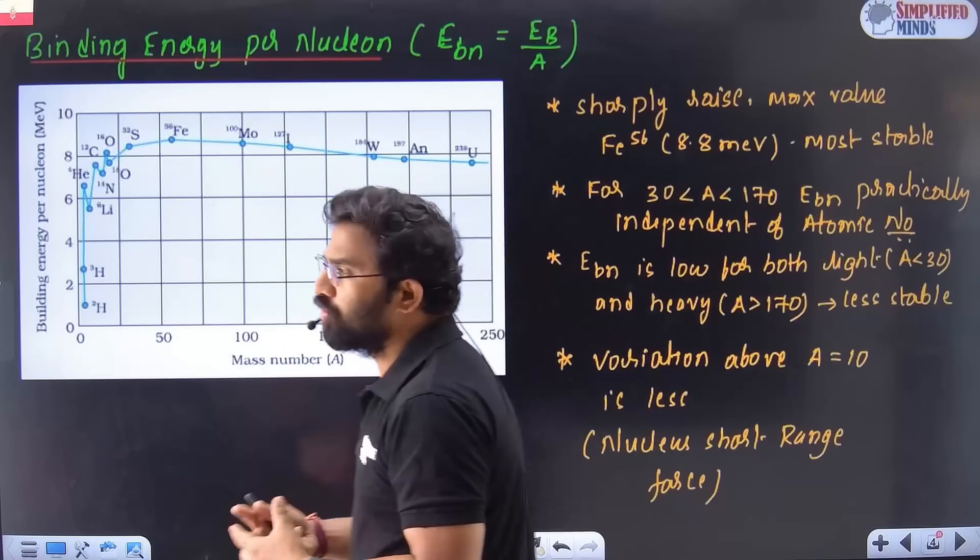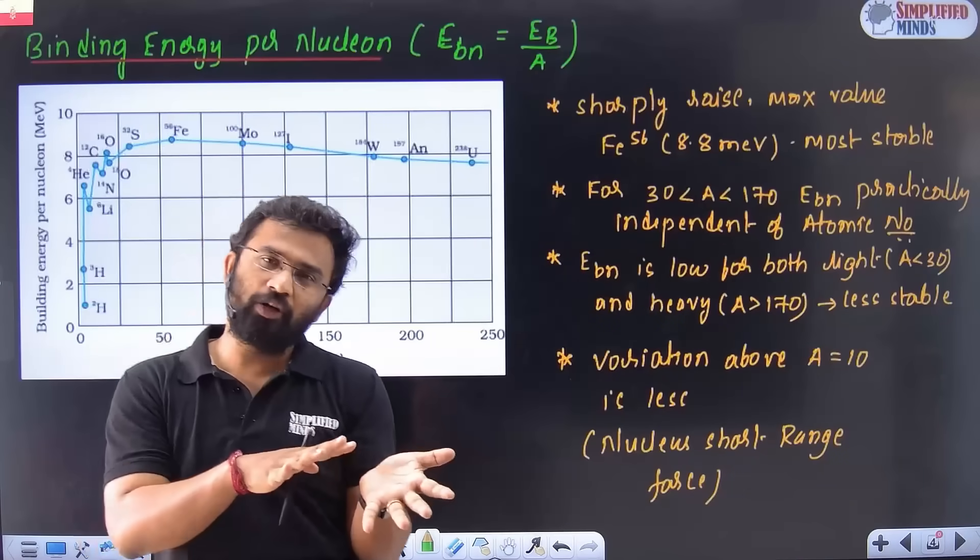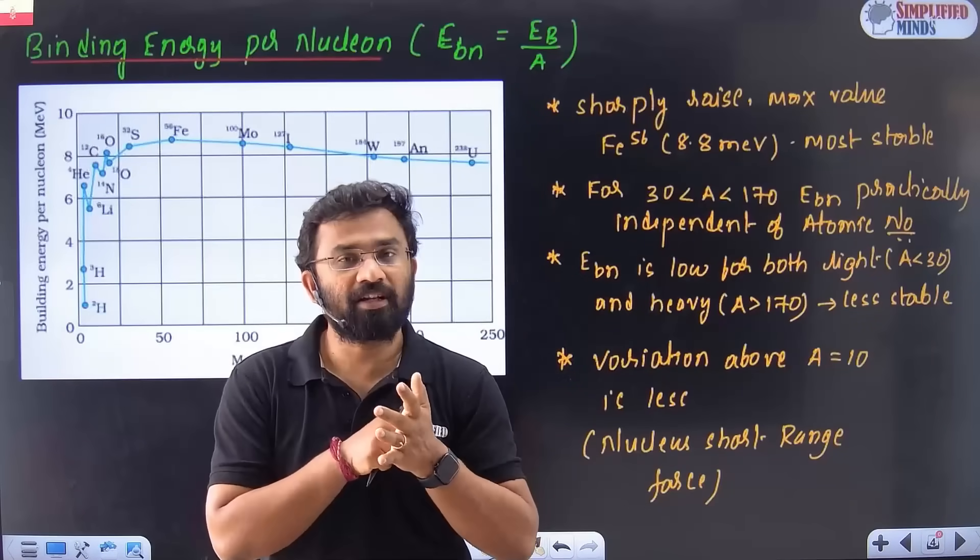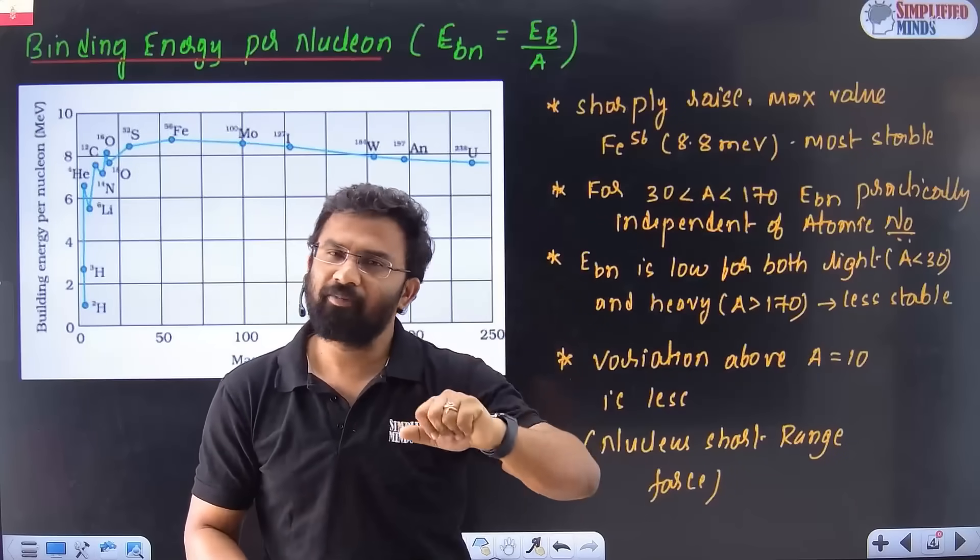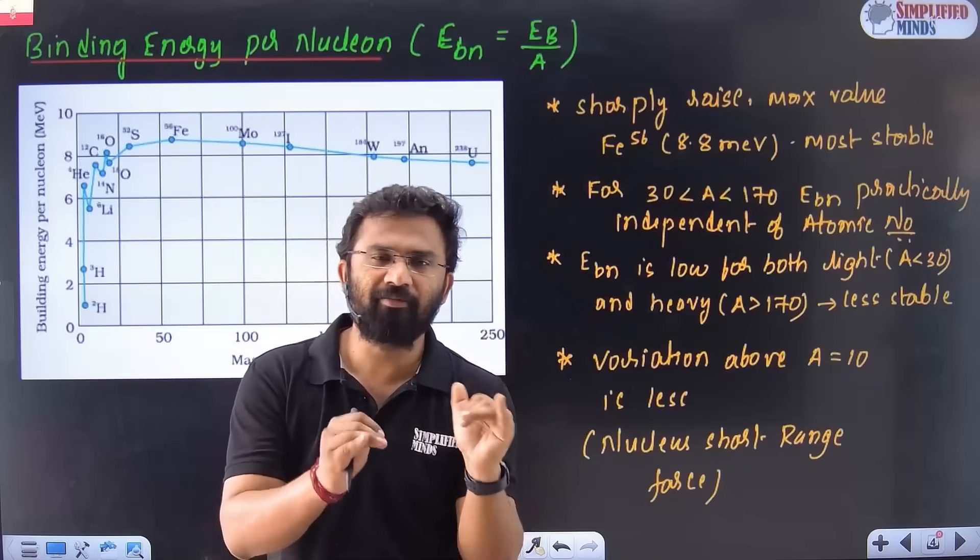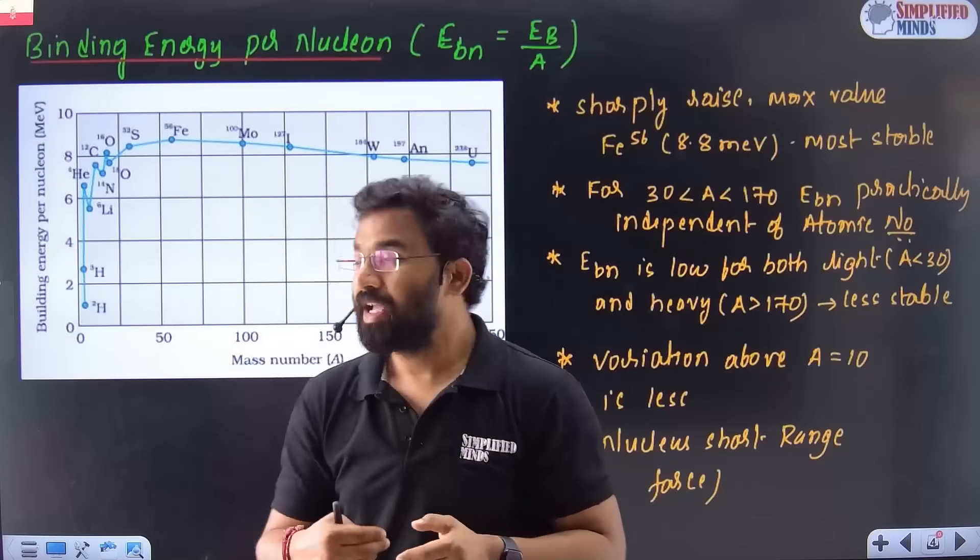Let's go for next one, Makla. We have something called binding energy per nucleon. So we know binding energy. But we need to calculate EBN, that's binding energy per nucleon. How are we going to calculate? Binding energy divided by number of nucleons. We will get binding energy per nucleon. EBN.